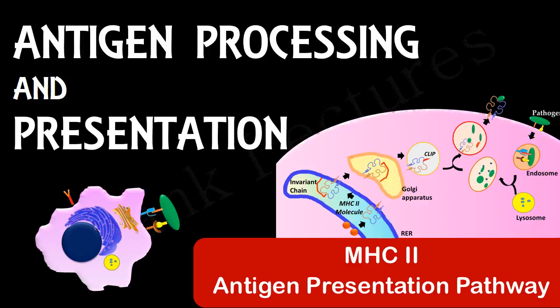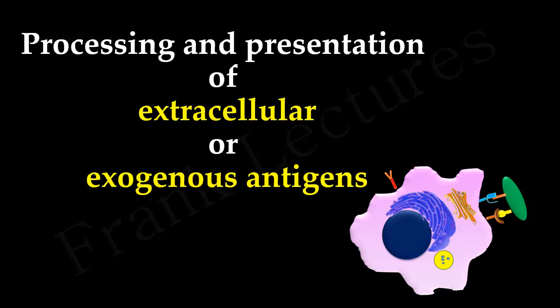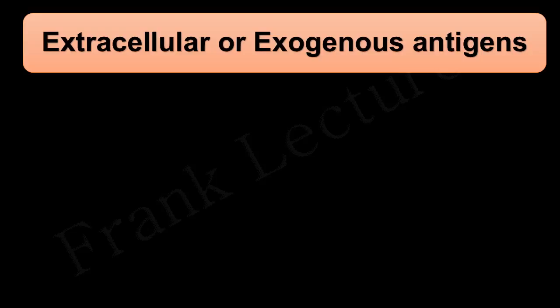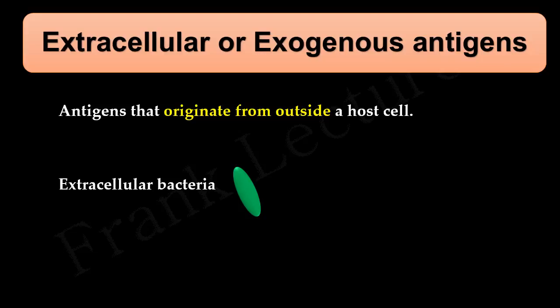In the last video lecture we saw how processing and presentation of intracellular pathogens takes place. Today we will study processing and presentation of extracellular or exogenous antigens. As the name indicates, extracellular or exogenous antigens are the antigens that originate from outside a host cell. For example, extracellular bacteria. These antigens are taken inside by cells either by endocytosis or phagocytosis.